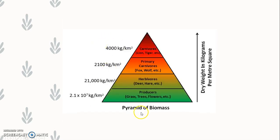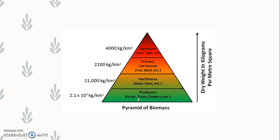Next is the pyramid of biomass. Here the producers — grass, trees, flowers — have a dry weight measured in kilograms per square meter. Biomass content at each trophic level: producers such as grass have less biomass compared to herbivores, which are primary consumers like deer and hare. Secondary consumers are primary carnivores like fox and wolf, and the top consumers — lion, tiger — are top carnivores having the highest biomass. This pyramid is also upright.